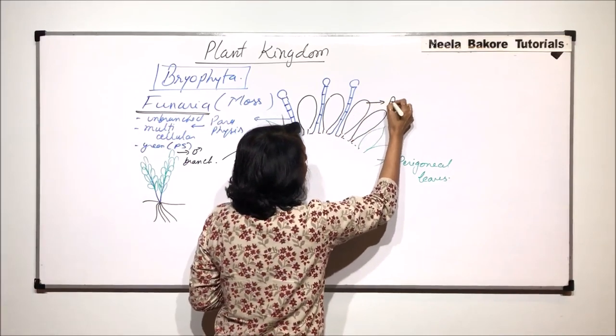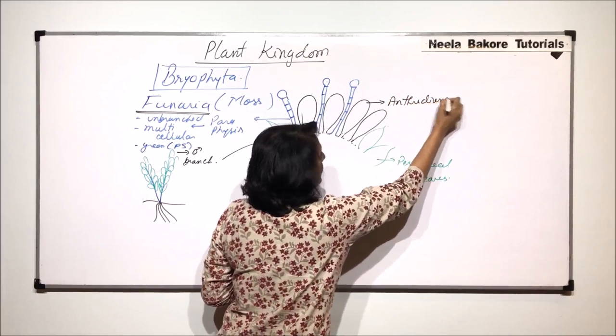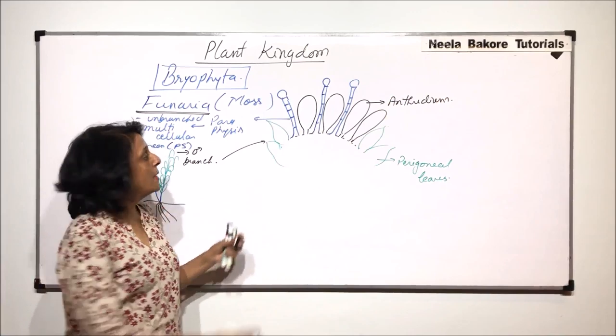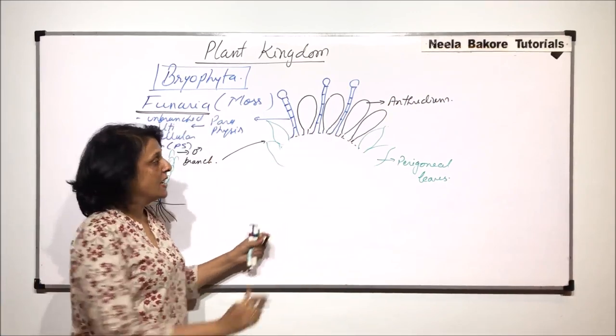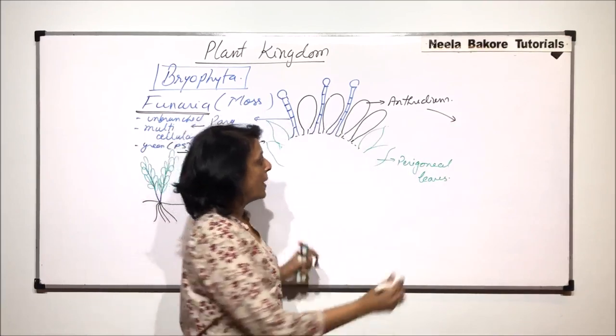This structure is the antheridia in which the male gamete or the sperm is going to develop. There are many antheridia and there are paraphysis. Now, if we draw the structure of this antheridium and enlarge it, there are two parts.